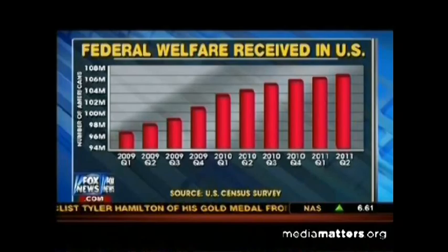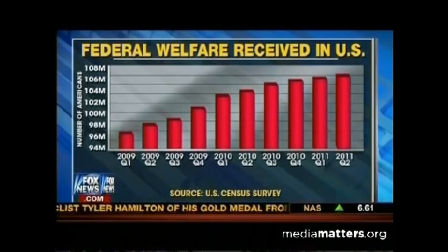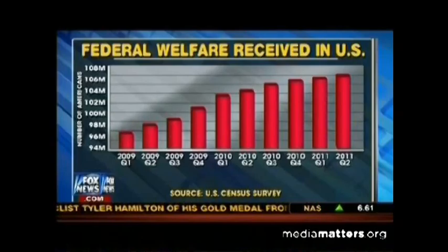The federal welfare received in the US graph — this is a classic Fox News tactic. If they want to make it appear as though there's been a dramatic increase, typically somewhere that makes President Obama or a Democrat look bad, what they'll do is truncate the y-axis. It looks like a dramatic increase, but when you look at the label on the left side of the graph, you see this doesn't start at zero — it only encompasses 94 million to 208 million. So we're really talking about a tiny little increase here, but when you mess with the proportions and perspective, it looks like federal welfare has blown up.